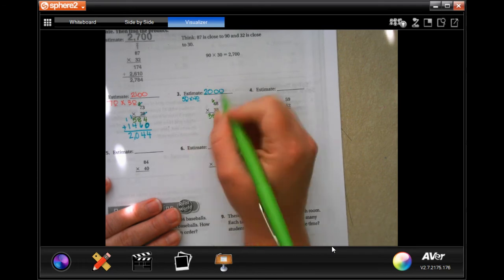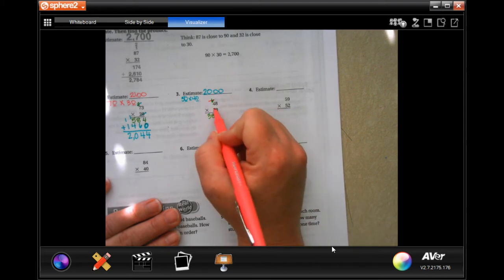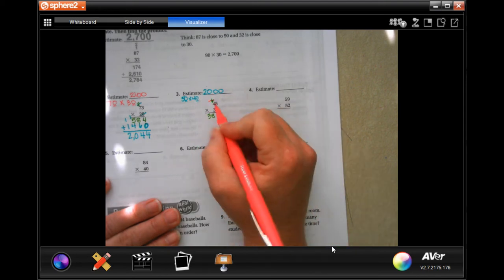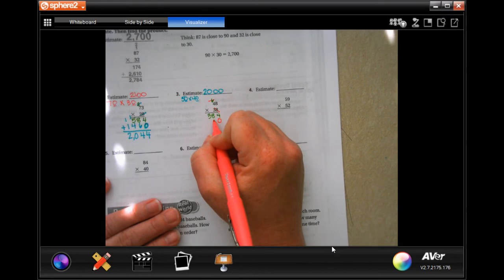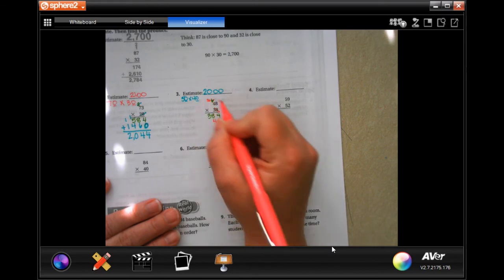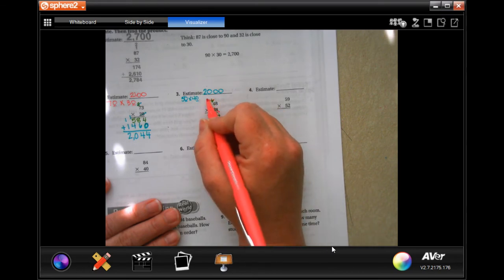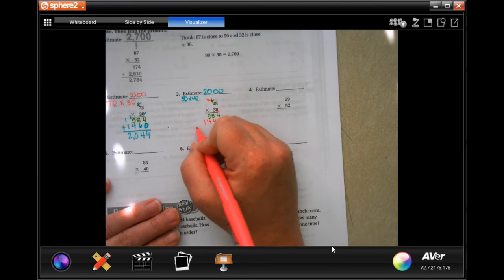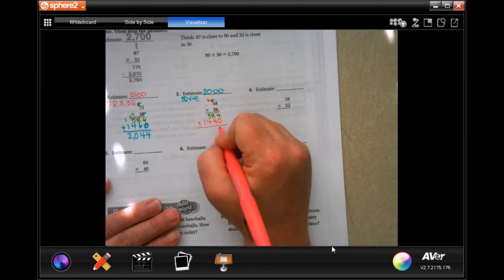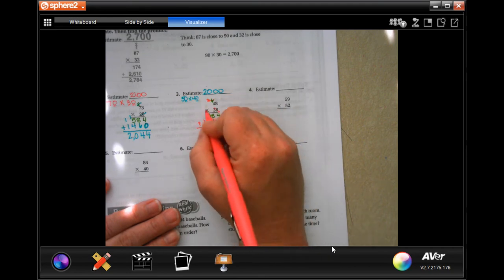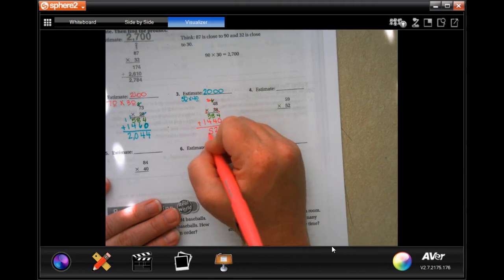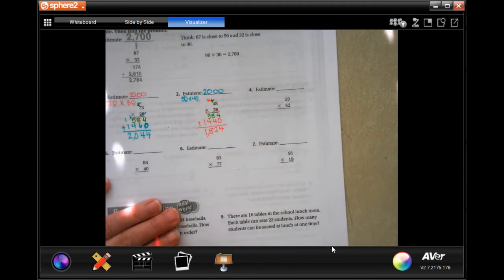We're going to go tic-tac-toe. Now 3 times 8 is 24, carry our 2. 3 times 4 is 12, plus 2 more is 14. Add them up. 4, 12, carry our 1, 7, 8, and then 1.